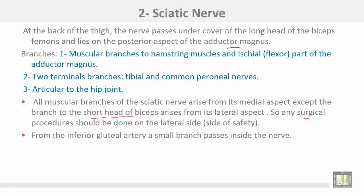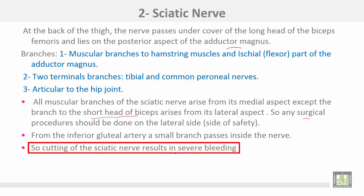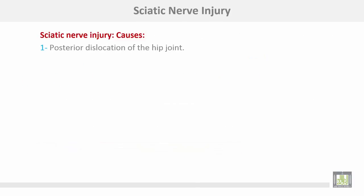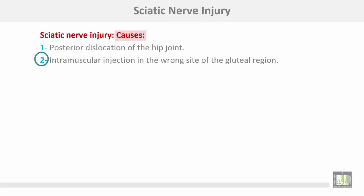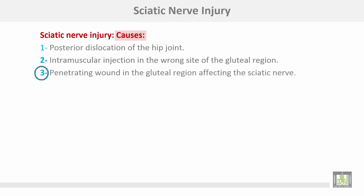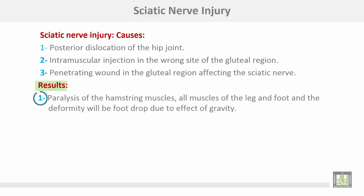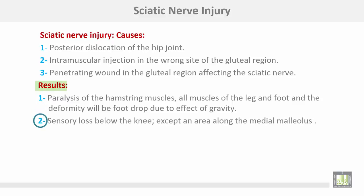From the inferior gluteal artery, a small branch passes inside the sciatic nerve, so cutting the nerve results in severe bleeding. Sciatic nerve injury may be caused by posterior dislocation of the hip joint, intramuscular injection in the wrong area of the gluteal region, or a penetrating wound in the gluteal region. Results of sciatic nerve injury include paralysis of the hamstring muscles, all muscles of the leg and foot, and foot drop deformity due to gravity. There is also sensory loss below the knee except along the area of the medial malleolus. Blood supply of the sciatic nerve is by a small branch from the inferior gluteal artery.